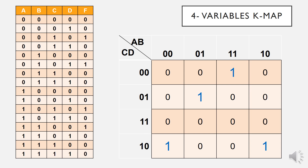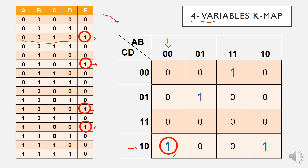For a quick recap, I explained how to transfer four variables from a truth table into a K-map. We focus on outputs with a high value — in this case, outputs one, two, three, and four. We match the input variables into the respective cells in the K-map. For example, a high output of zero-zero-one-zero maps to the cell zero-zero-one-zero, and we insert the value one into that cell. Similarly, the three other high outputs are mapped into their respective cells.